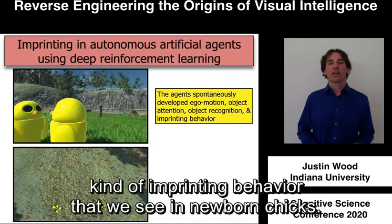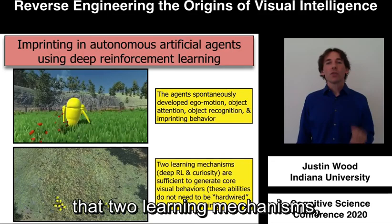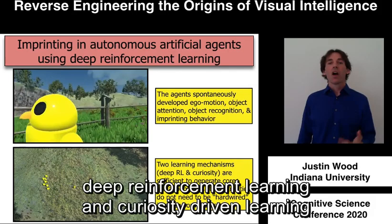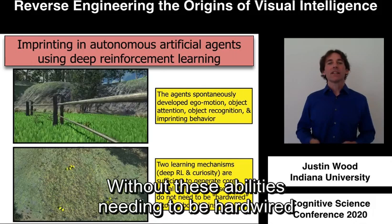This experiment provides a computational proof that two learning mechanisms — deep reinforcement learning and curiosity-driven learning — are sufficient to generate core visual behaviors, without these abilities needing to be hardwired into the brain.